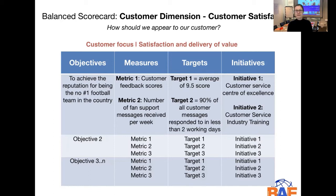How do we know that we are the number one? We can have metrics such as customer feedback scores, and we could have a metric around the number of fan support messages that we receive per week. A target could be an average score of 9.5 out of 10 for our customer feedback. The second target could be that we reply to 90% of all our customer messages within two working days.